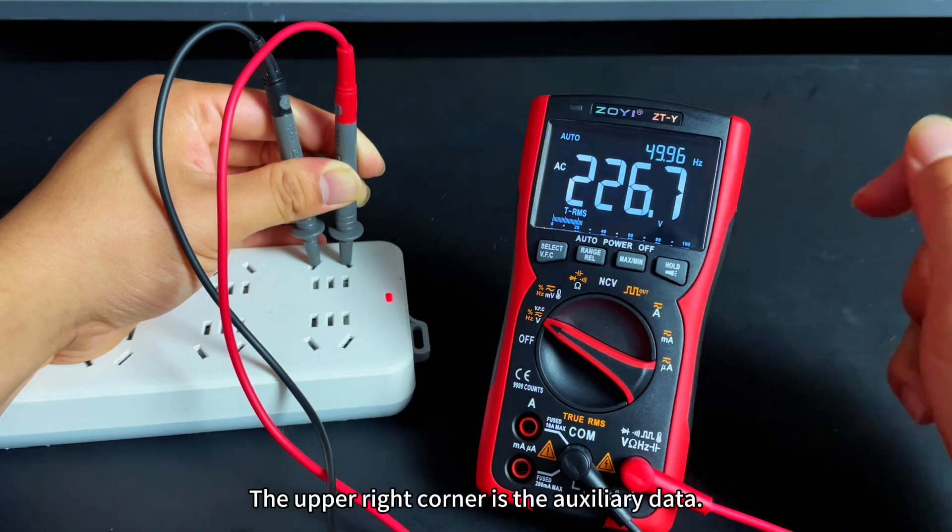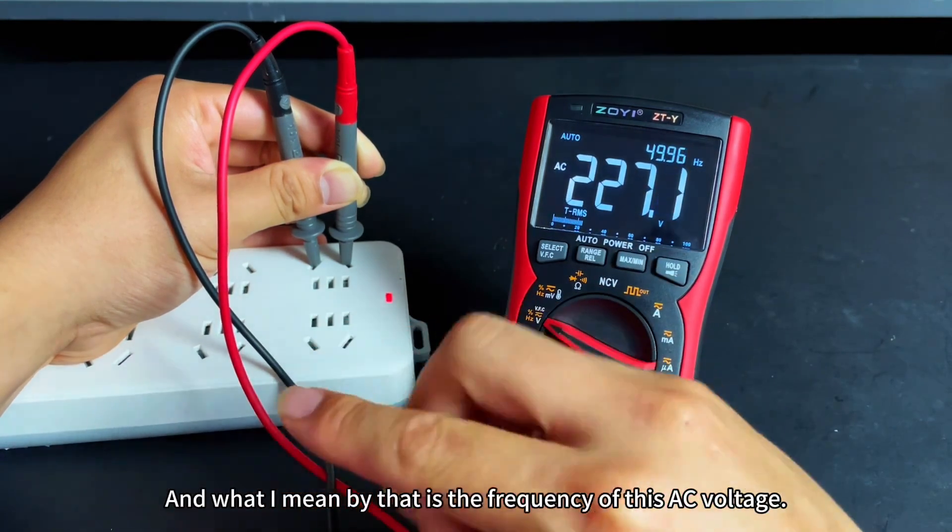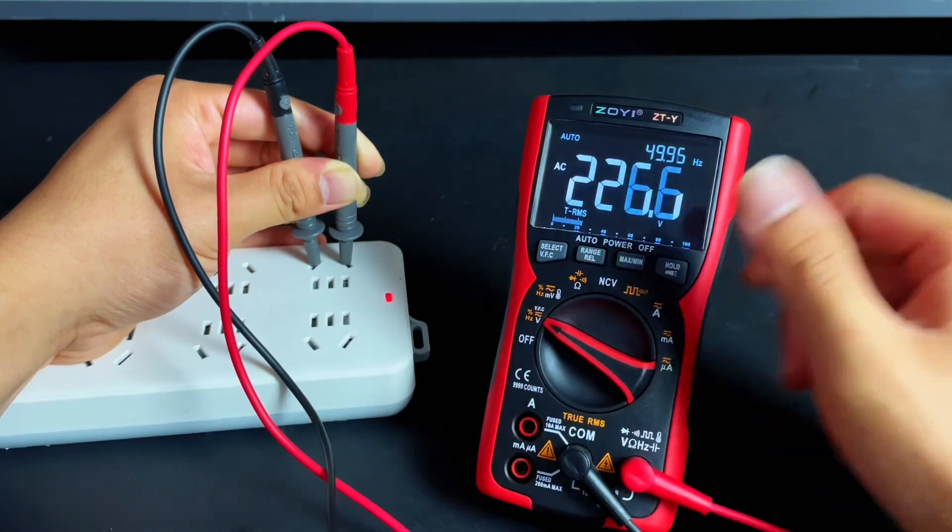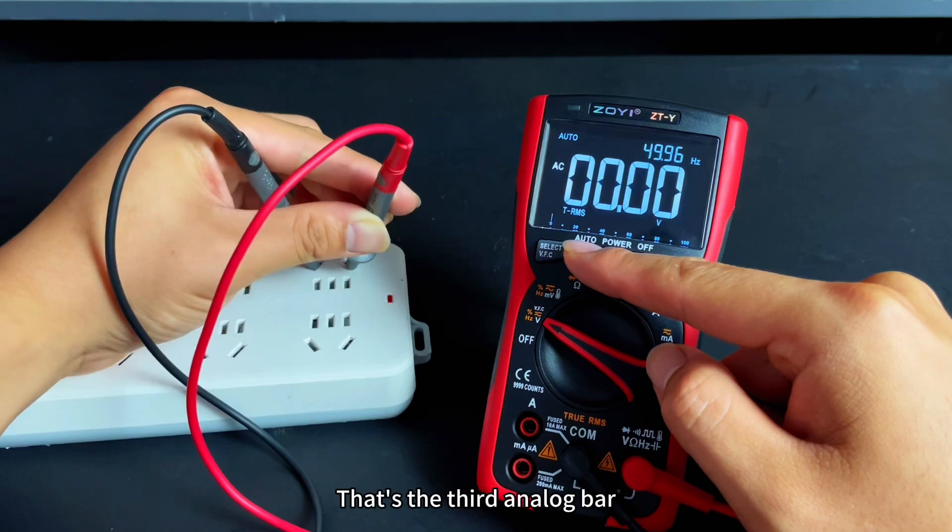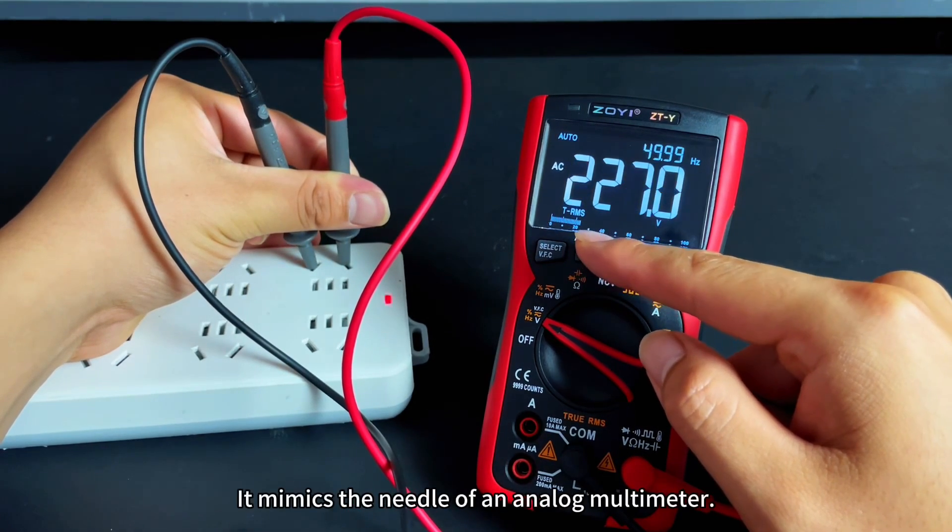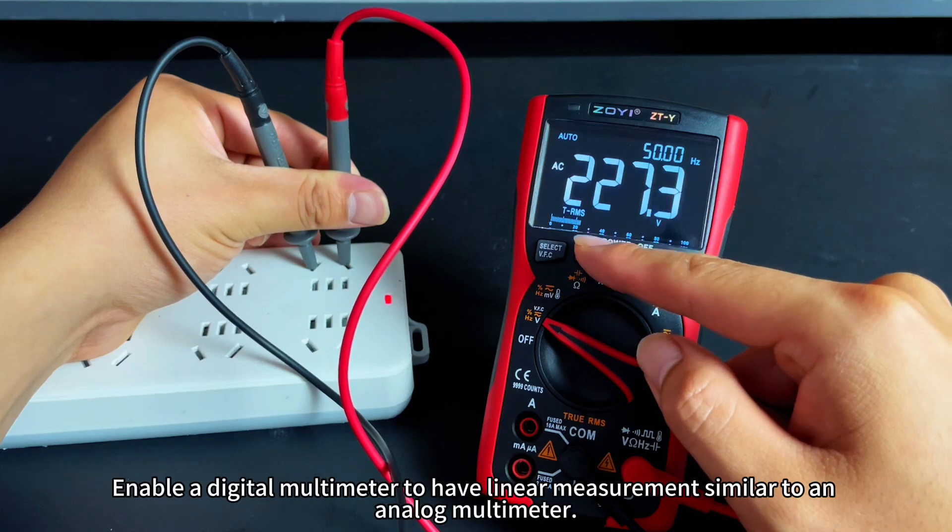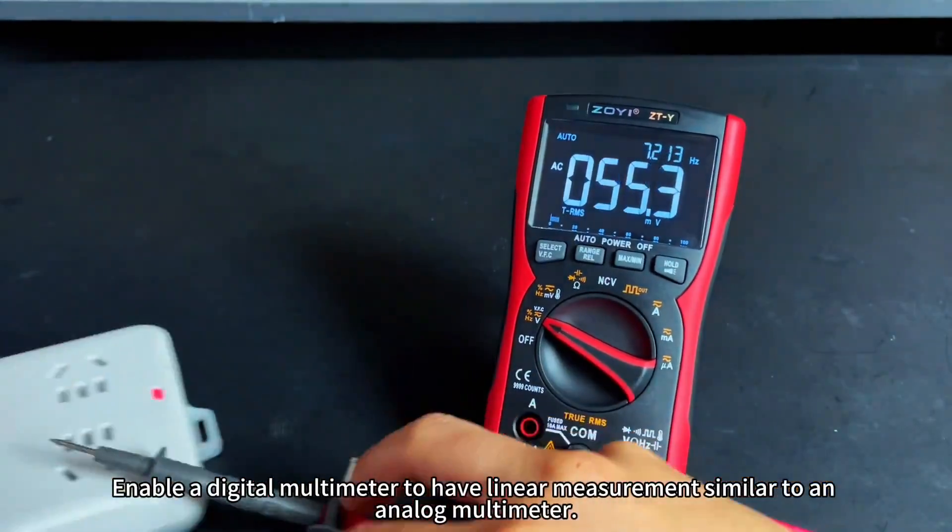The upper right corner is the auxiliary data, which shows the frequency of this AC voltage. The bottom one is like a loading strip, the third analog bar. It mimics the needle of an analog multimeter, enabling a digital multimeter to have linear measurements similar to an analog multimeter.